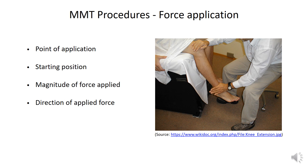For the manual muscle testing procedure itself, there are several things to note about how the therapist applies the testing force to ensure reliability. Firstly, the point where force is applied may determine the response of the patient. For example, if we were to test the strength of knee extensors, there are multiple places the clinician can place their hands on the anterior aspect of the leg. The patient will find it easier to push against the therapist's hands when they are closer to the knee than when closer to the ankle. Secondly, the starting position of the limb can also influence the patient's ability to contract the muscle, because when a muscle is extremely shortened or lengthened, its force generation is at its lowest.